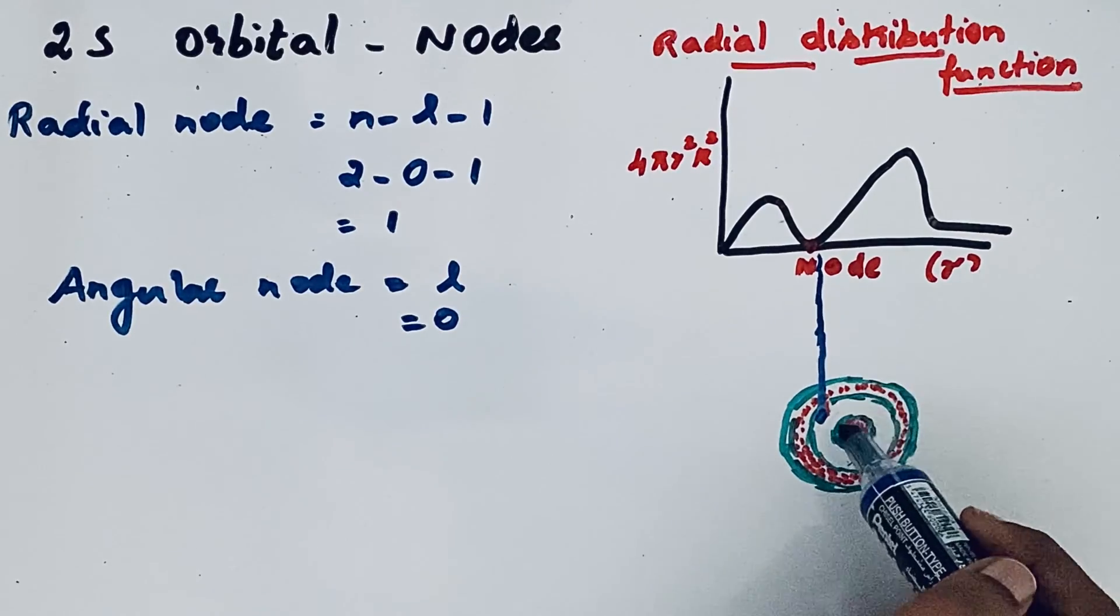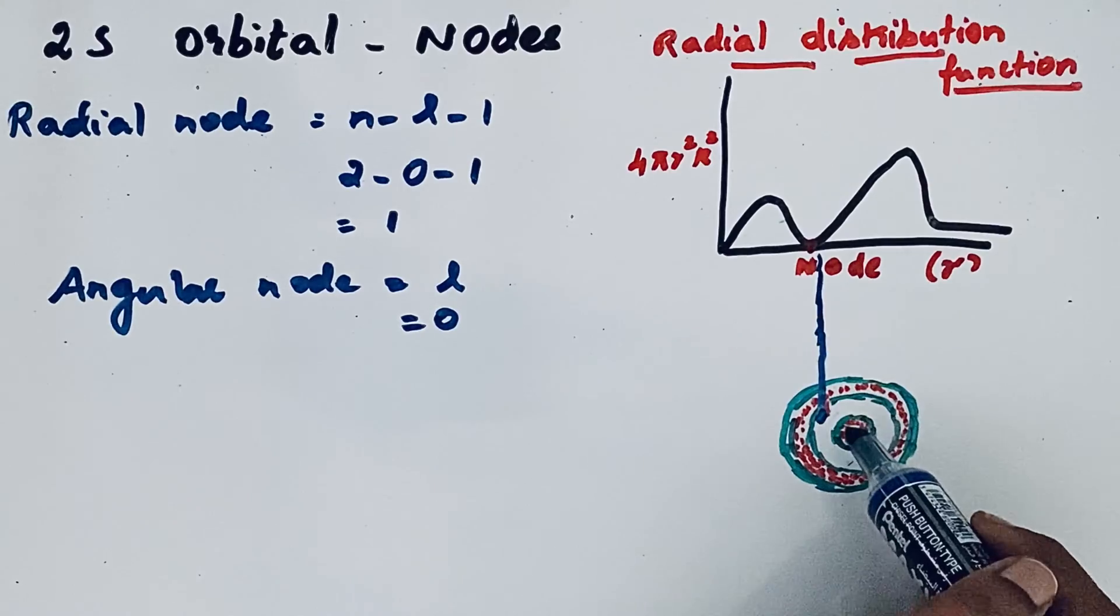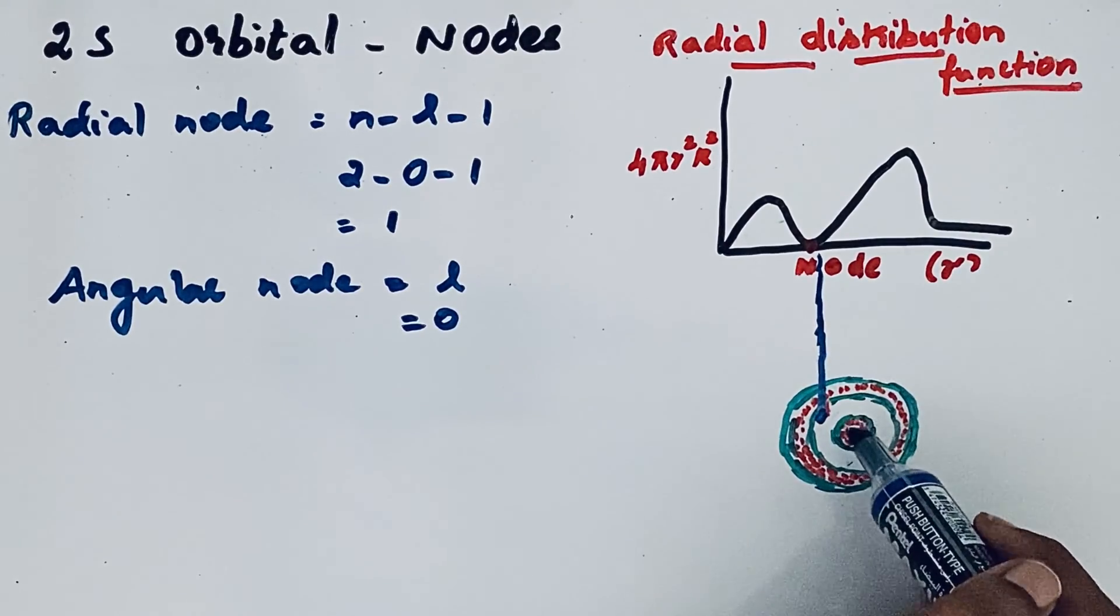It means the 2s orbital can penetrate into the nucleus. So this gives extra stability for the 2s orbital.